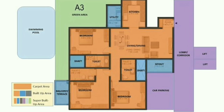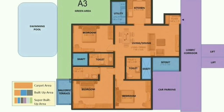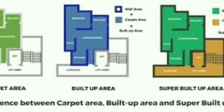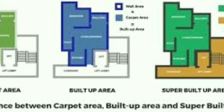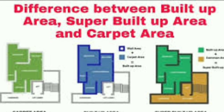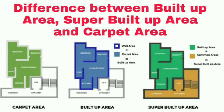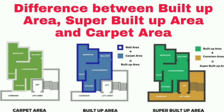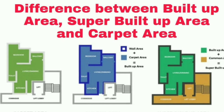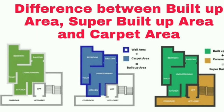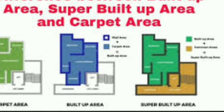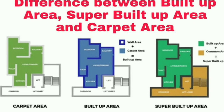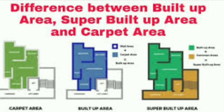In summary: carpet area or floor area is the usable area without walls. Plot area is the total site area. Built-up area includes carpet area plus walls. Setback area is the open space around the building. Super built-up area includes common areas like swimming pools, staircases, and lifts. These terms are useful not only for civil engineers but for everyone involved in real estate.